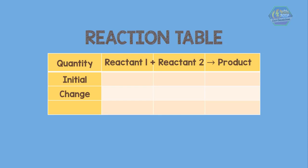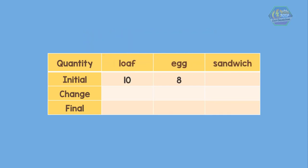For example, the sandwich making. The table shows the following important points: number one, in the initial line product has not yet formed so the entry is zero sandwich. Number two, in the change line since the reactants eggs and loaves are used during the reaction their quantities decrease, so the changes in their quantities have a negative sign.